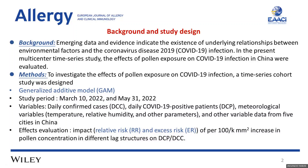Daily confirmed cases (DCC), daily COVID-positive patients (DCP), meteorological variables, and other variables were collected. Both single pollen and multiple adjusted GAM pollen analyses were established to estimate the impact of per 100-unit increase in pollen concentration in different lag structures on DCP or DCC.